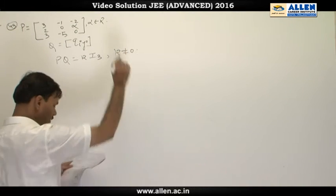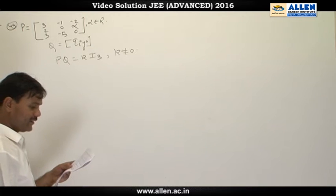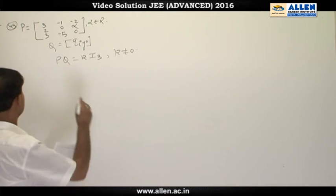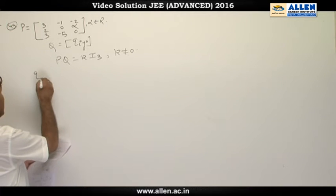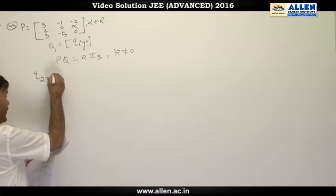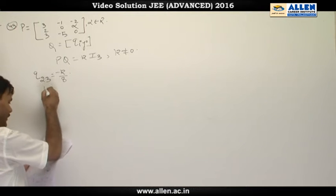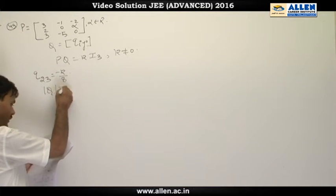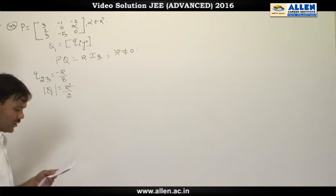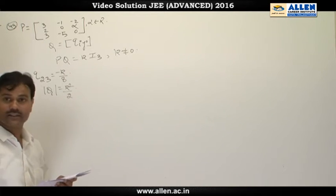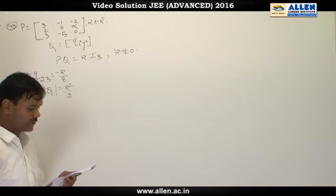We are given one more piece of information: q₂₃ equals minus k upon 8, and the determinant of Q is given as k² divided by 2. We have to find the value of α, find k, and check the different options.